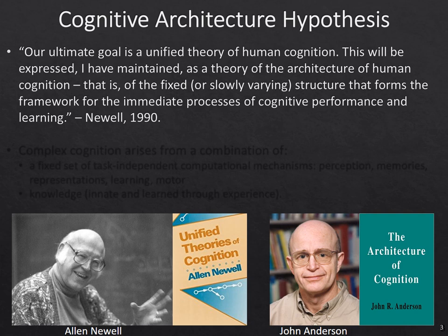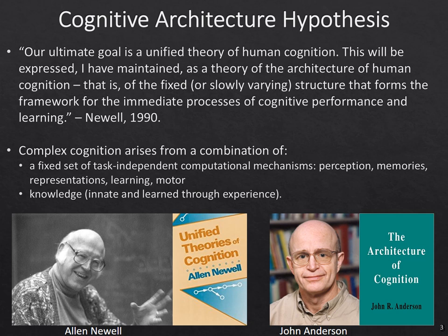This was in contrast to the idea that cognition is made up of task-specific modules that somehow are learned and integrate together in order to perform. The idea in cognitive architecture is that complex cognition arises from a combination of a fixed set of task-independent computational mechanisms, such as perception, memories, representations, learning mechanisms, decision-making mechanisms, and the motor system.